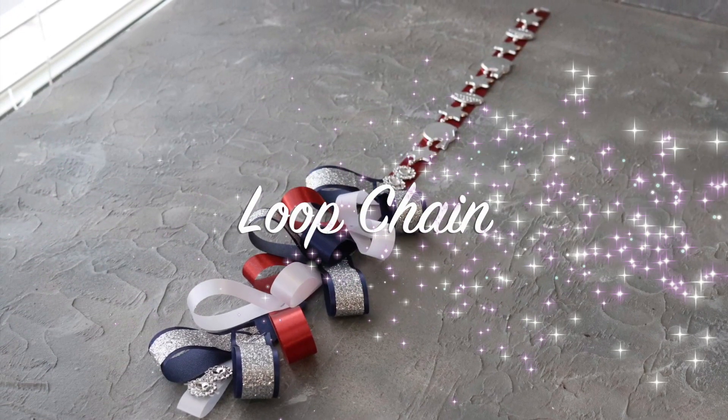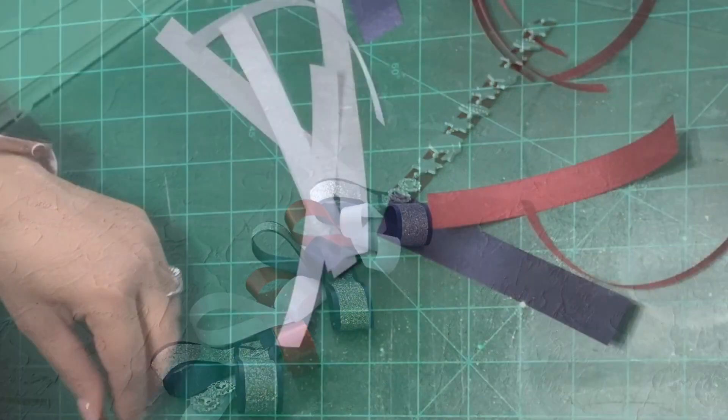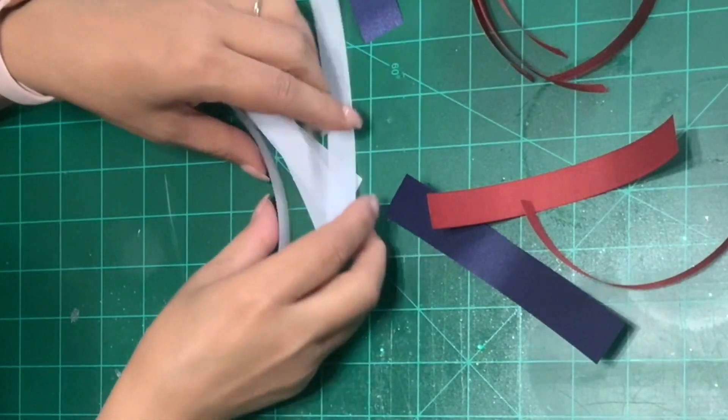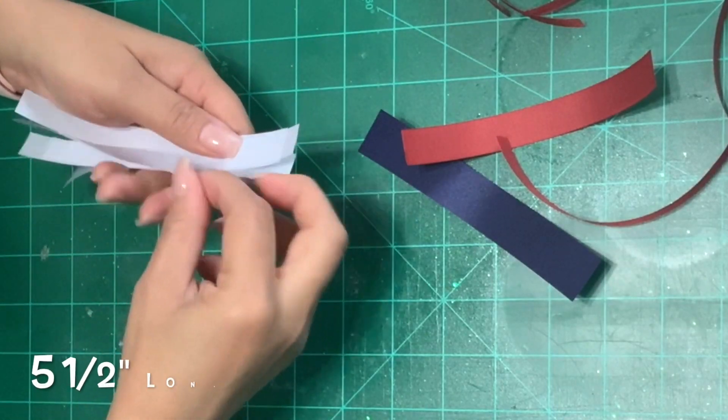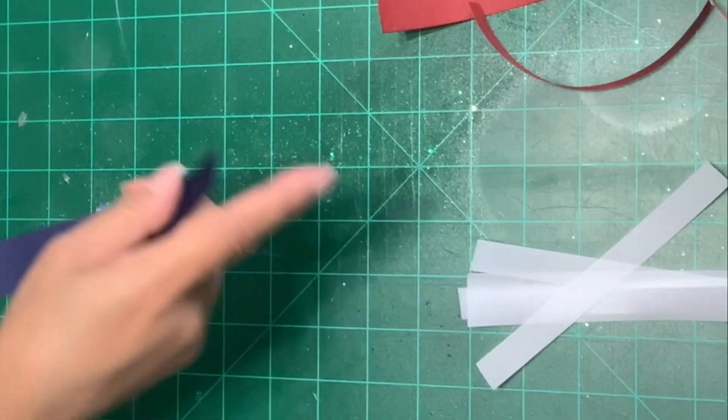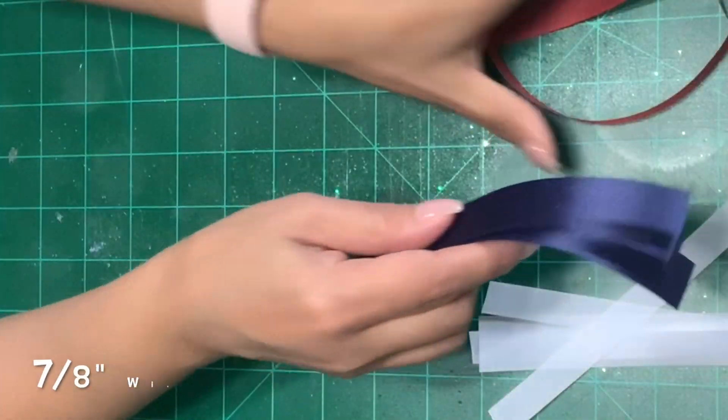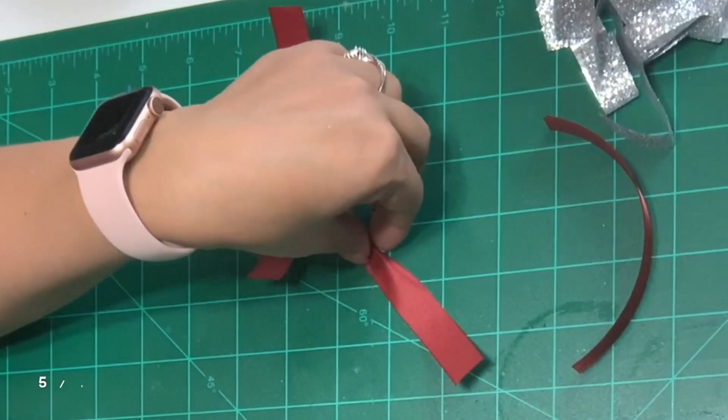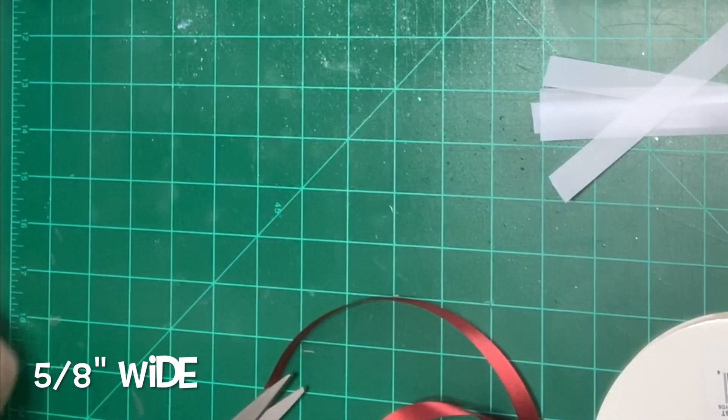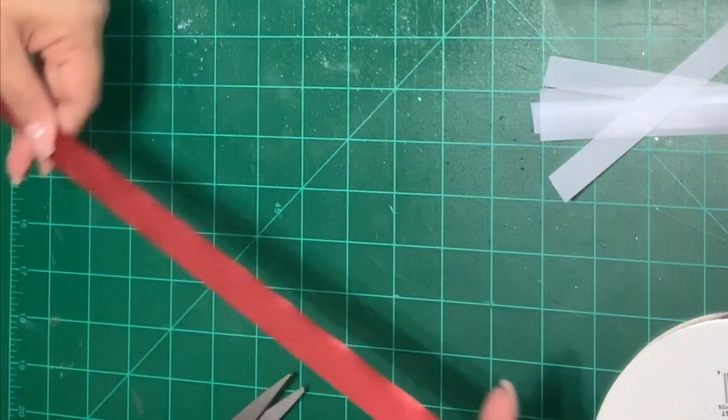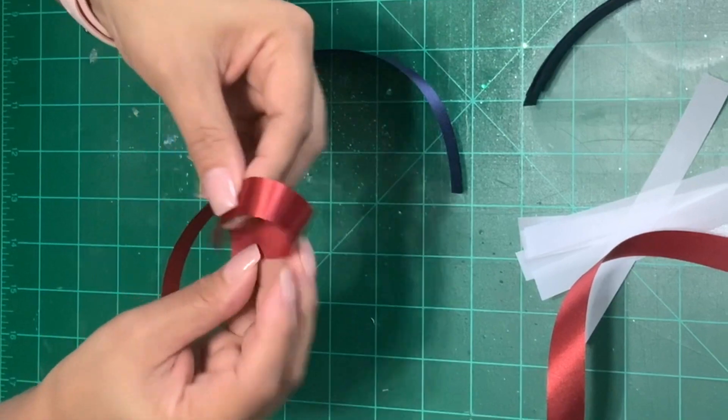Next we're going to be making a loop chain. If you have random pieces of ribbon this is a great time to use them. I have different size ribbons I cut five and a half inches long. This white one is nine sixteenth of an inch. This blue one is seven eighth of an inch. This orange one is five eighth of an inch. These glitter ones are five eighth of an inch but again you don't have to have the same size as I do. You can have your own. So now we're just going to be creating loops.